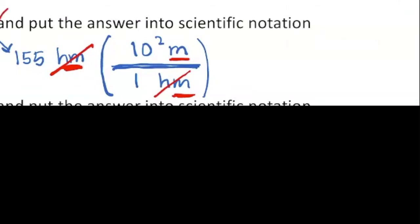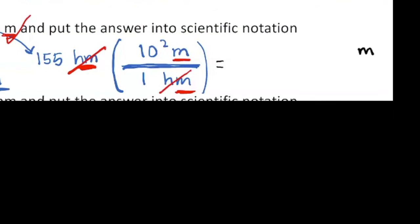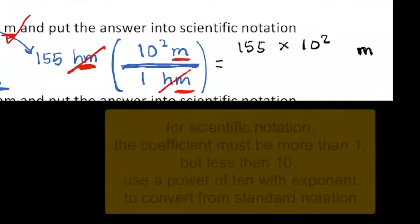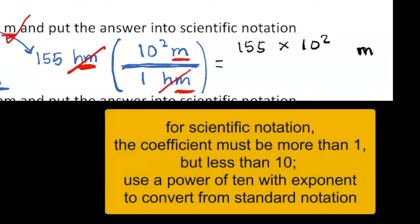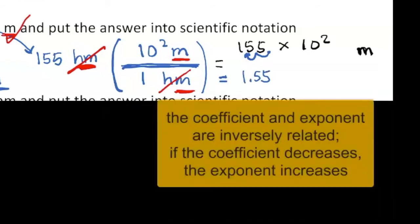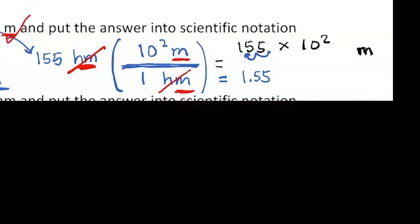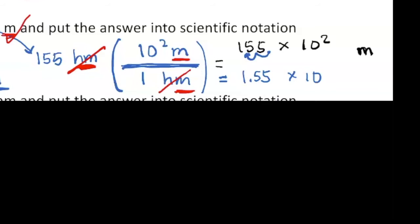Once the units check out, write an equal sign and leave space for the number, then put the unit m. The numbers calculate as 155 times 10 squared divided by 1, or just 155 times 10 squared. To put this into scientific notation, you need a number between 1 and 10. Since 155 is more than 10, move the decimal so the number becomes 1.55. The number decreased by 2 powers of 10, so the exponent 2 must increase by 2, giving 10 to the 4th. The answer in scientific notation is 1.55 times 10 to the 4th meters.